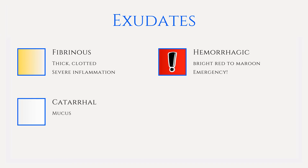The inflammatory process can accelerate mucus production, which is referred to as catarrhal exudate. Examples of catarrh include phlegm that builds up in the throat and rhinorrhea, also known as runny nose.